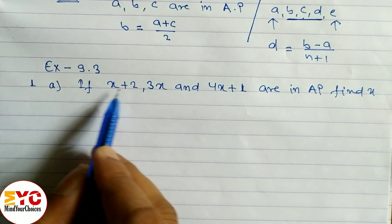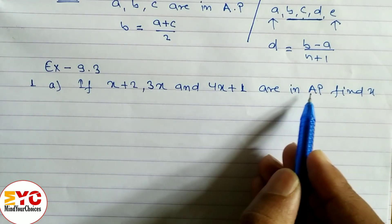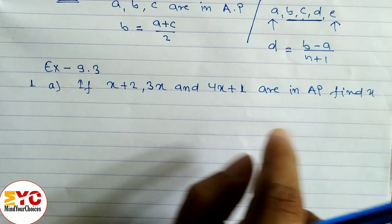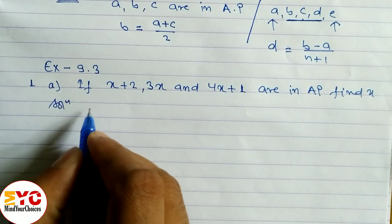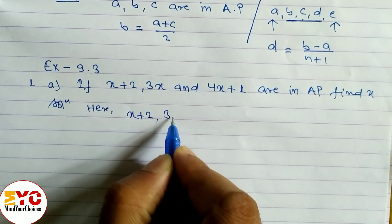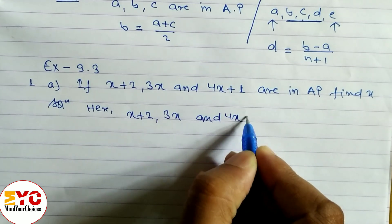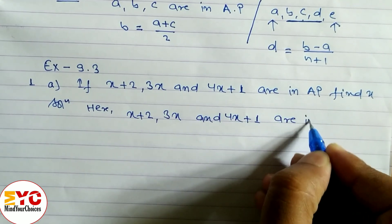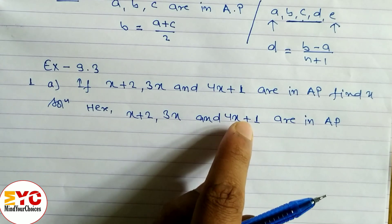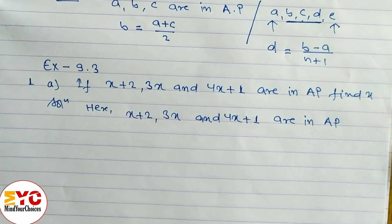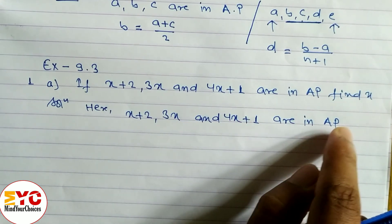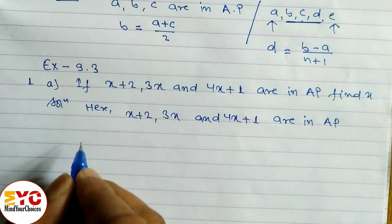Now let's start Exercise 9.3. The question is: if x + 2, 3x, and 4x + 1 are in AP, find x. Since these three terms are in arithmetic progression, the difference between the second and first term equals the difference between the third and second term: t2 − t1 = t3 − t2.